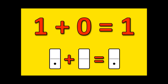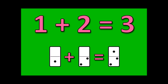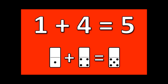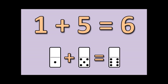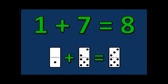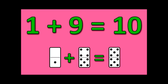One plus zero is one. One plus one is two. One plus two is three. One plus three is four. One plus four is five. One plus five is six. One plus six is seven. One plus seven is eight. One plus eight is nine. One plus nine is ten.